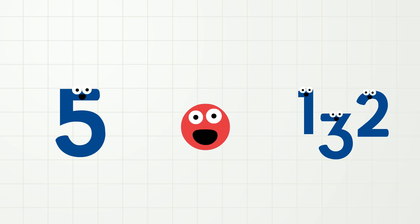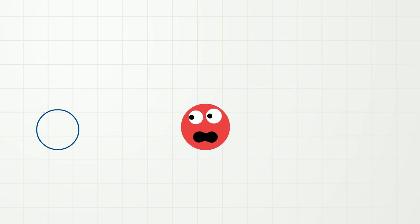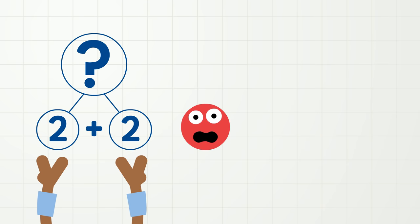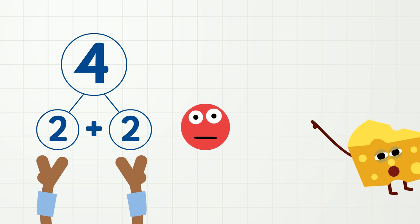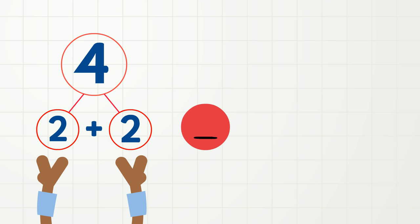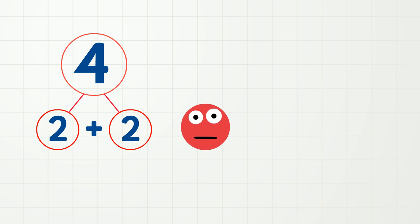I will show you with an example. Here we have the number two, and there is another number two. What happens if you put two and two together? That's right, you get four! This two and this two came together and made the number four. So four is made up of two and two, which means four can be taken apart into two and two.